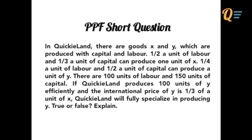If Quickie Land produces 100 units of Y efficiently and the international price of Y is one-third of a unit of X, Quickie Land will fully specialise in producing Y. True or False, Explained.